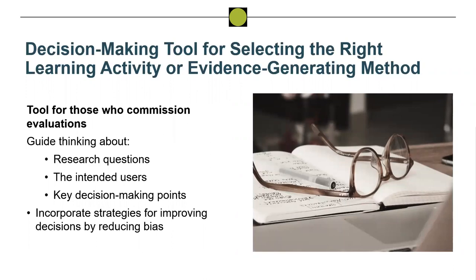The last strategy is focused on individuals who commission an evaluation. It's about creating a decision-making tool for selecting the right learning activity or evidence-generating method. An evaluation may or may not be the best activity to address specific information needs in a timely manner. This tool would help guide thinking around research questions, intended user groups, and key decision-making points when that learning would be used. The tool would incorporate one or more strategies for improving decision-making by reducing bias — for example, encouraging people to consider the opposite of whatever decision they are about to make.